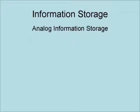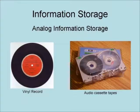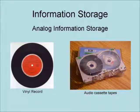One form of information storage is what's called analog. Analog information storage involves storing information by mimicking the pattern of the incoming signal. This is a vinyl record, which uses grooves in the record to store sound patterns. These are audio cassette tapes, which use magnetic patterns to store sound patterns.